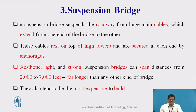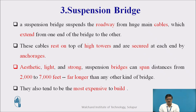The next type is a suspension bridge, where suspenders are used. The suspension bridge suspends the roadway from huge main cables which extend from one end of the bridge to the other. These cables rest on top of high towers and are secured at each end by anchorages. Aesthetic, light, and strong — these are the specialities of the suspension bridge. It can have a span in the range of 2000 to 7000 feet, but they also tend to be the most expensive to build.